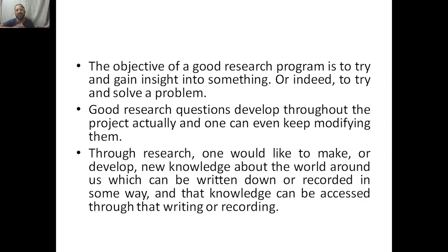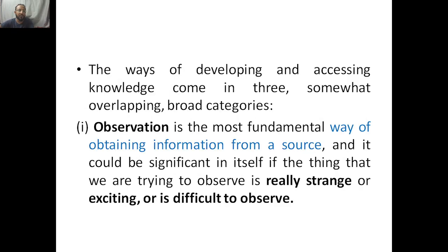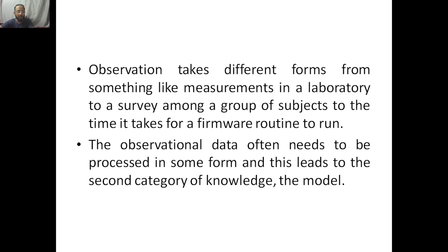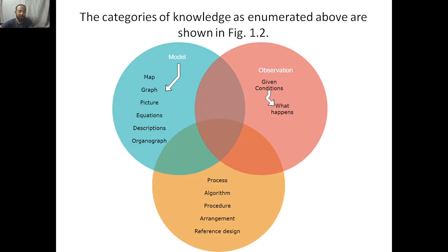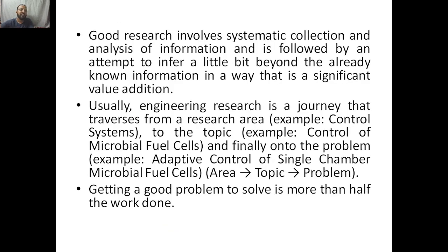Through research, one would like to develop new knowledge about the world around us. This knowledge can be written down or recorded and accessed through that writing or recording — essentially published. When research is categorized, the ways of developing and accessing knowledge come in three broad, sometimes overlapping categories: observation, the process, and models — which we will discuss in the next class.